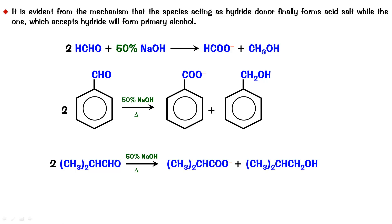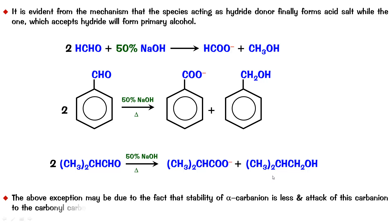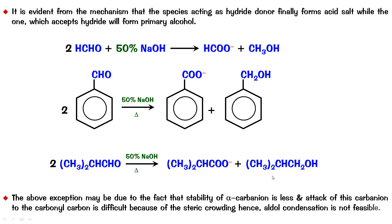One molecule of this aldehyde gets oxidized to the carboxylate ion and the other to the alcohol. So 2-methylpropanal becomes 2-methylpropanoate and 2-methyl-1-propanol. The above exception is due to the fact that the alpha carbanion is less stable and attack of this carbanion on the carbonyl carbon is difficult because of steric crowding.